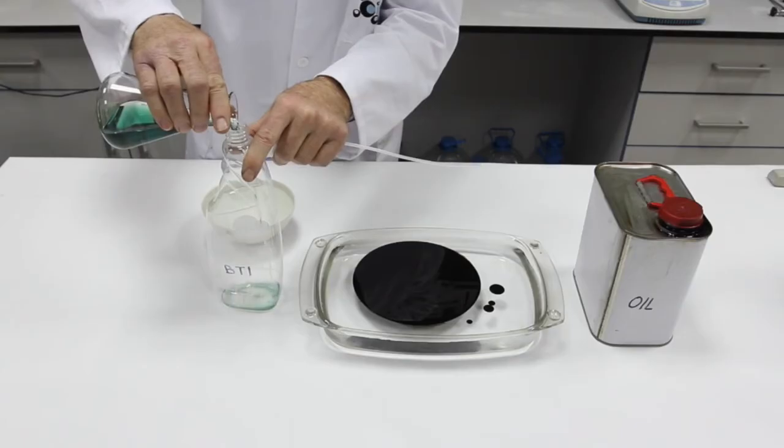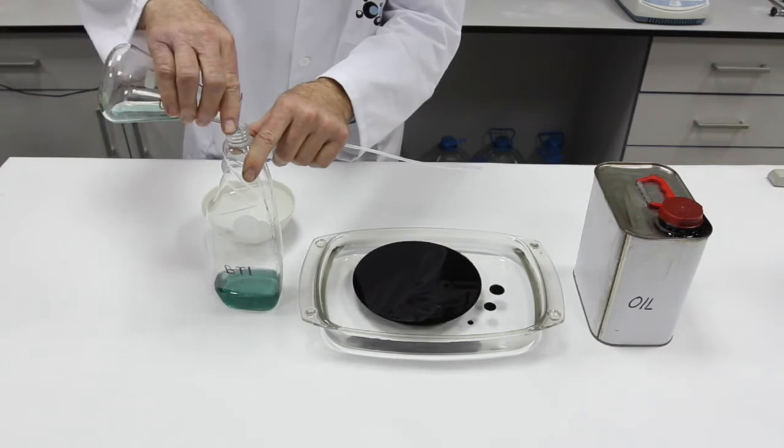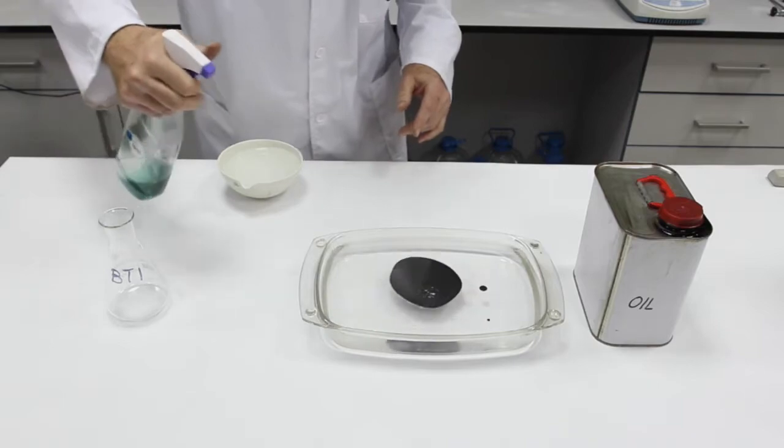The technician fills a spray bottle of BTI solution and applies it over the crude oil spill area. The extension of the crude oil spill vastly shrinks in size in reaction to the BTI chemical.